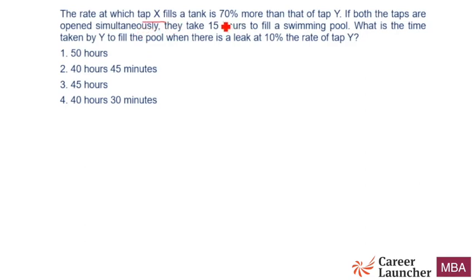The rate at which tap X fills the tank is 70% more than that of tap Y. Tap Y fills the tank at 10 liters per hour, so tap X will fill it at 17 liters per hour. Work with simple numbers - this 10 is simple, 17 I can't help because the number given in the question is such. If both taps are open simultaneously, they take 15 hours to fill a swimming pool.